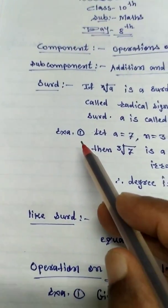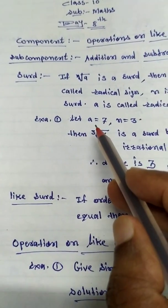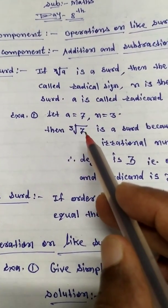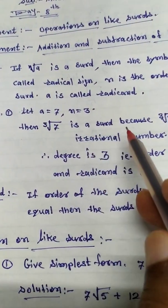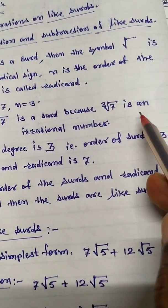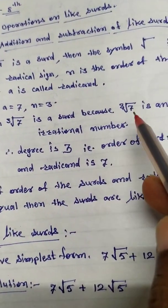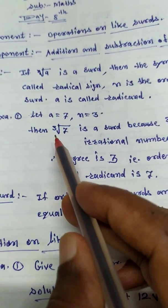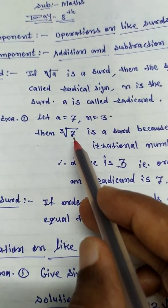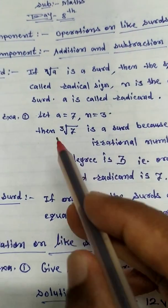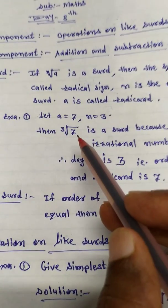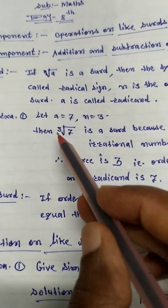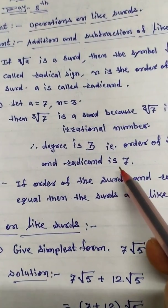Now let us see one example. If A is equal to 7 and N is equal to 3, then Nth root of 7 is a surd, because this is an irrational number. So this cube root of 7 is a surd. Now degree of this, that is order of this surd, is 3, and 7 is the radicand.